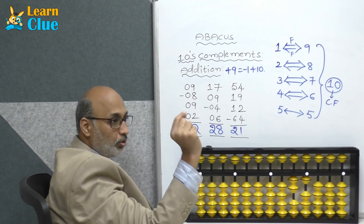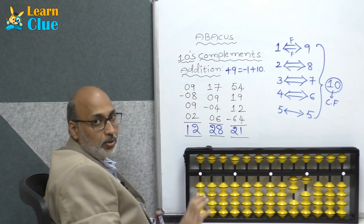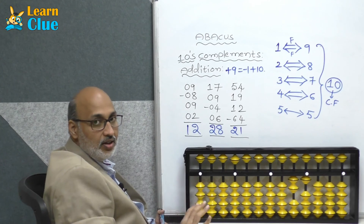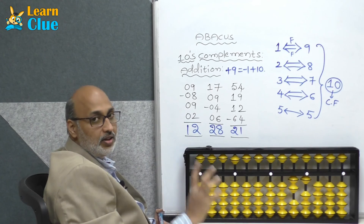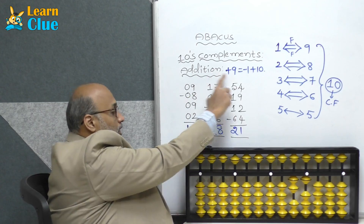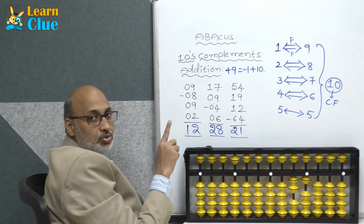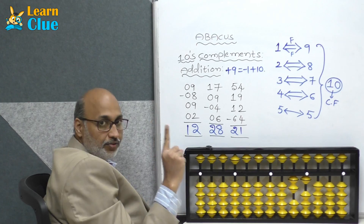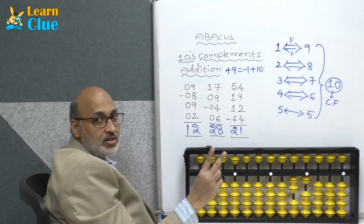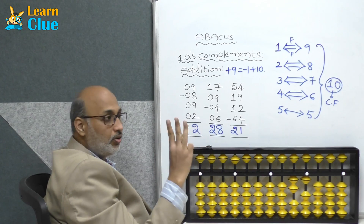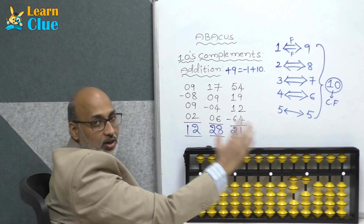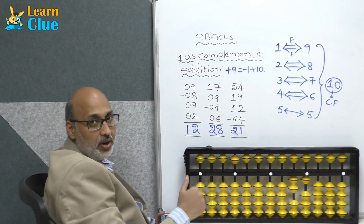All the time you have to remember only two important things: the friends group of 5s complements and the friends group of 10s complements — that is nothing but small friends and big friends. If you remember the friends, whenever you get a problem, first try to solve it directly. If not possible, go to 5s complements. If still not possible, go to tens complements. That's the sequence. Do practice well.